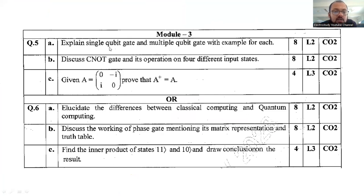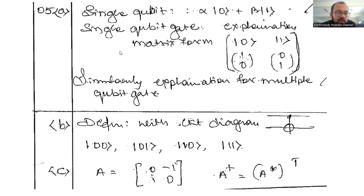Explain the single qubit gate and multiple qubit gate for each example, which has the weightage of eight marks. How do you answer question number five A? Here I have given the shortcut.